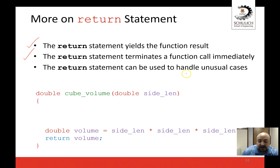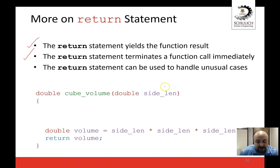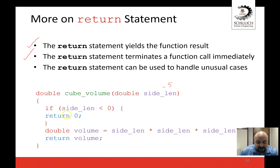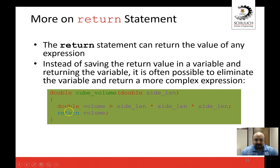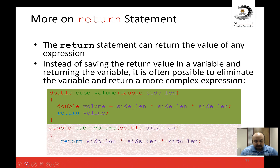Third, and really important: the return statement can handle unusual cases. For example, if you call cube_volume and by mistake you send a negative number as the side length — that doesn't make sense, you can't have a negative volume. You could handle it with an if statement: if side_length is less than zero, then return zero. Please go over these slides — I have an example where I declare a variable, calculate the result, and return volume.